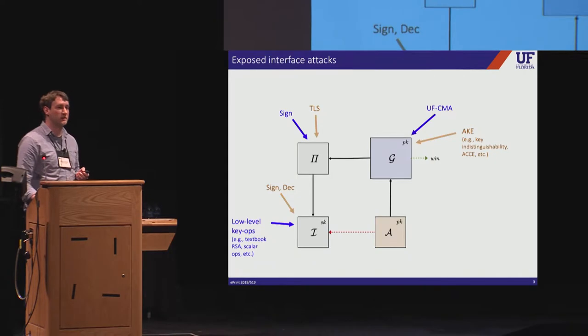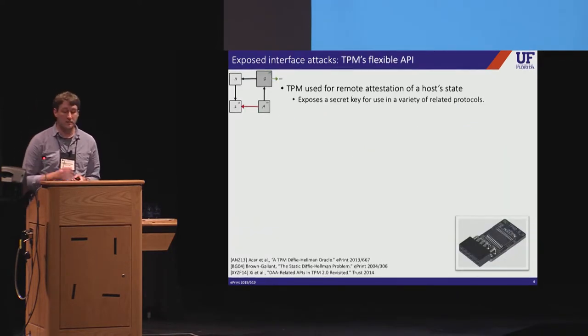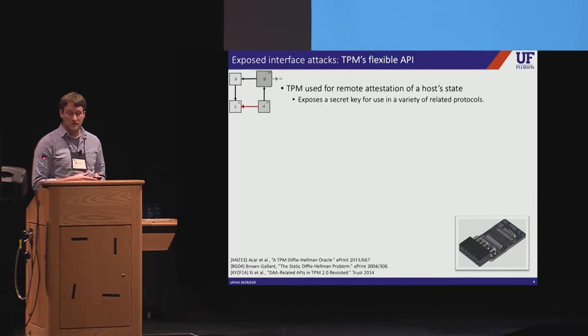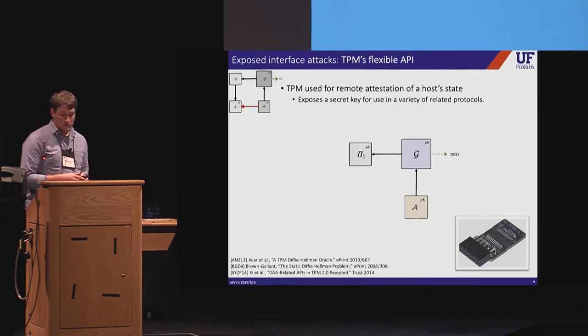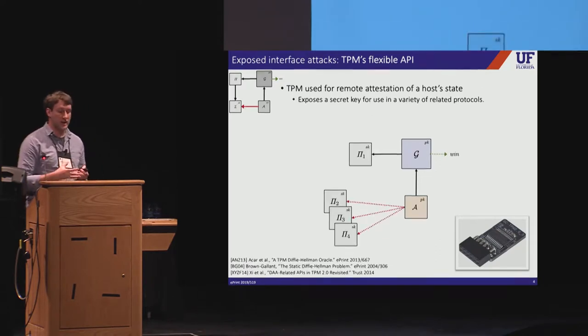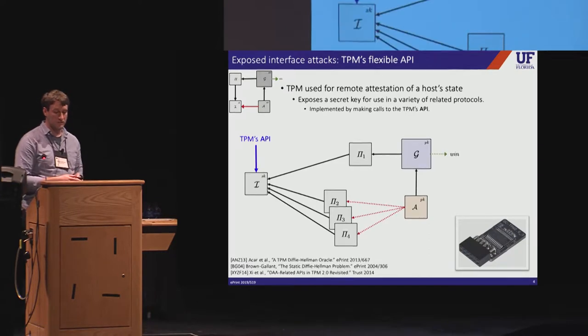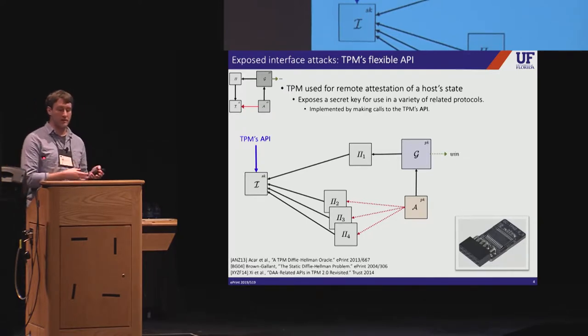So let me now illustrate this with a couple of concrete examples. The first is TPM. So TPM is a specification for on-chip crypto processors that provide a variety of security features used in trusted computing applications. One such feature is remote attestation of a host state, which is useful for things like digital rights management. So TPM supports several protocols for remote attestation, many of which use the same key pair. Thus, this of course raises the question of whether these protocols are jointly secure. So suppose we want to study the security of a particular protocol when the adversary can simultaneously execute other protocols all using the same key. As it turns out, each of these protocols is implemented by making calls to the TPM's API.